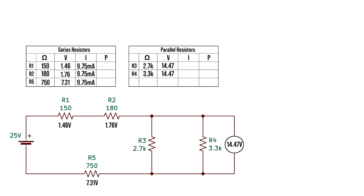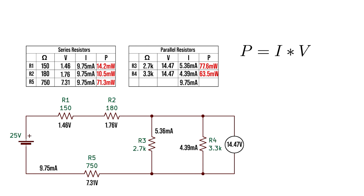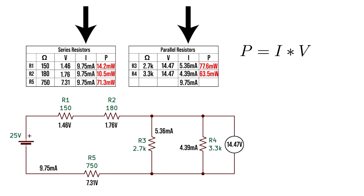At this point we can use Ohm's law to solve the current through each resistor by dividing the voltage each resistor sees by its individual resistance. Kirchhoff's current law tells us the sum of these currents should equal the total current of 9.75 milliamps — which it does. The last thing we need is the power rating for each resistor, so we multiply the voltage column by the current column and calculate all those values. And there you have it — we've solved the complete circuit.